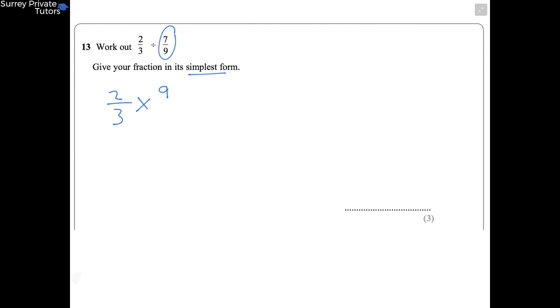And your second fraction becomes 9 over 7. Now you need to multiply your top and bottom numbers together, so the top, 2 times 9 becomes 18, and the bottom, 3 times 7 becomes 21.